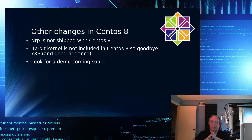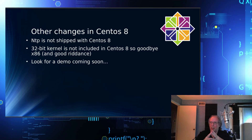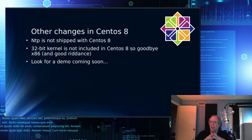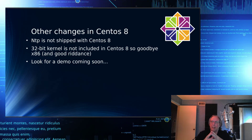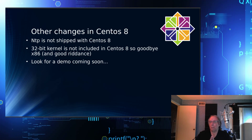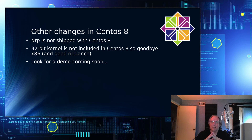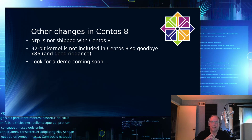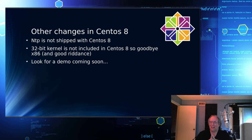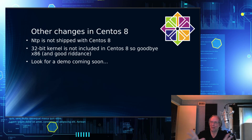NTP is not shipped with CentOS 8 — I assume they'll be using Chrony as the replacement, as many places have gone that route. Also, the 32-bit kernel is not included in CentOS 8 and is not available — you can't even compile it. So goodbye x86 kernels.